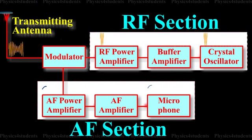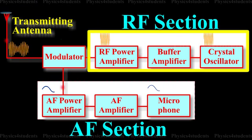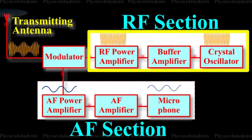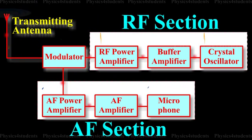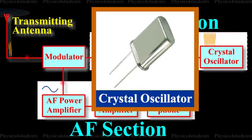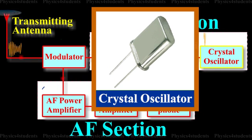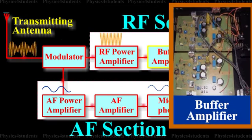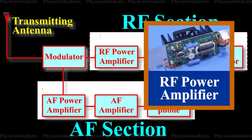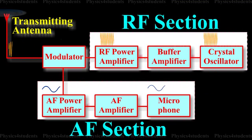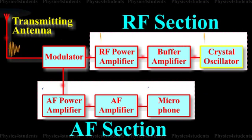Let us see about the radio frequency section, i.e. RF section. In the radio frequency section, the high frequency carrier wave is generated by a crystal controlled oscillator. The output of the crystal controlled oscillator is power amplified by the radio frequency power amplifier. The buffer isolates the RF power amplifier from the oscillator. This arrangement keeps the frequency of the crystal controlled oscillator constant.